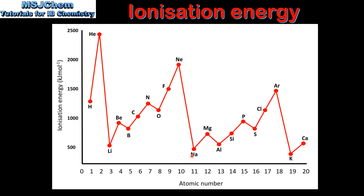Looking at Period 3 — that's sodium to argon — once again we can see that the ionization energy increases across a period. There are exceptions to the trend: the drop in ionization energy from beryllium to boron, nitrogen to oxygen, magnesium to aluminium, and phosphorus to sulfur all go against the general trend. I'll look at these exceptions in a later video.